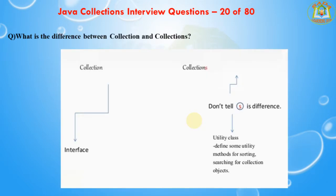The next question is: what is the difference between Collection and Collections? Collection is an interface whereas Collections is a class. The Collection interface provides normal functionality of data structures to List, Set, and Queue. But the Collections class is used to sort and synchronize the collection elements.